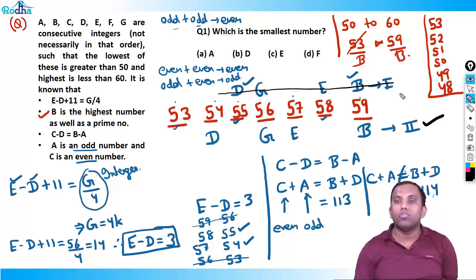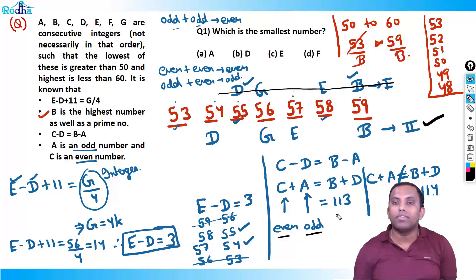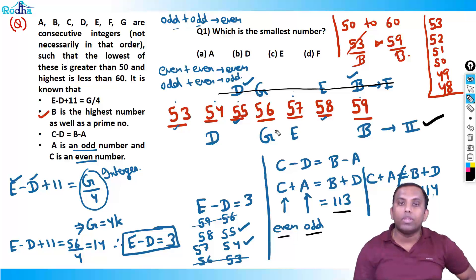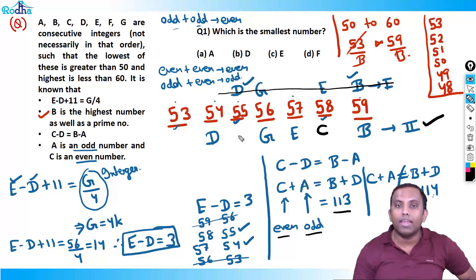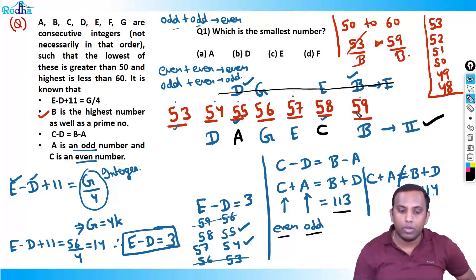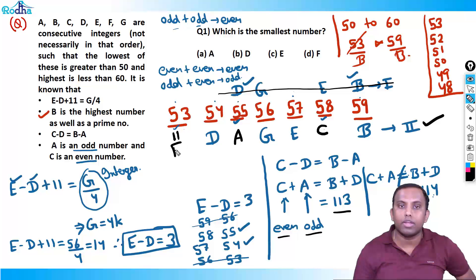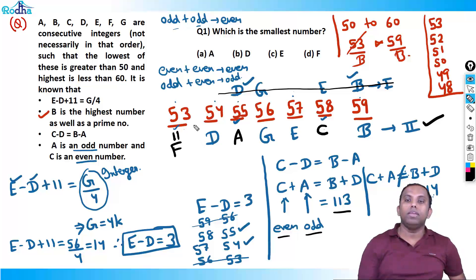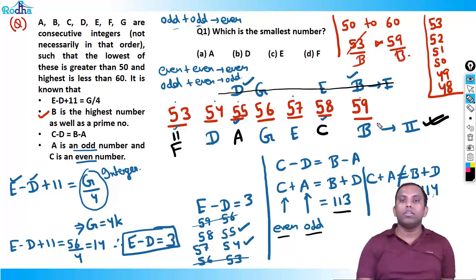So Case 1 is eliminated and Case 2 is the correct one. C plus A equals 113, C is even, A is odd — so C equals 58 and A equals 55 (58 + 55 = 113). That leaves F as the only remaining number, so F equals 53. Final values: A=55, B=59, C=58, D=54, E=57, F=53, G=56.